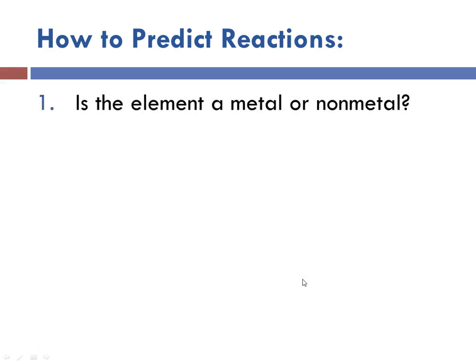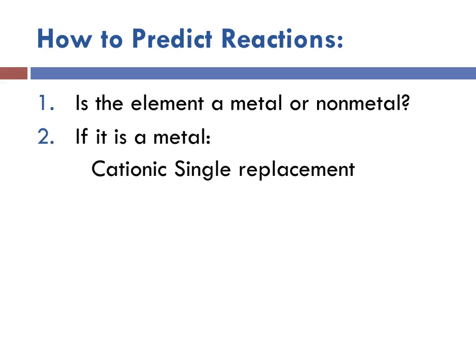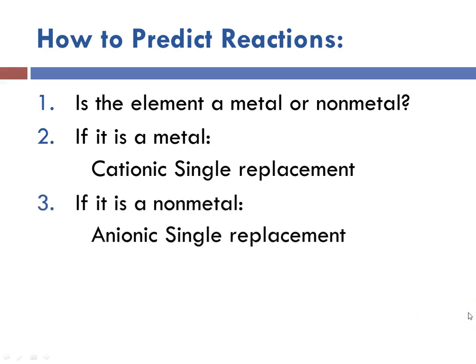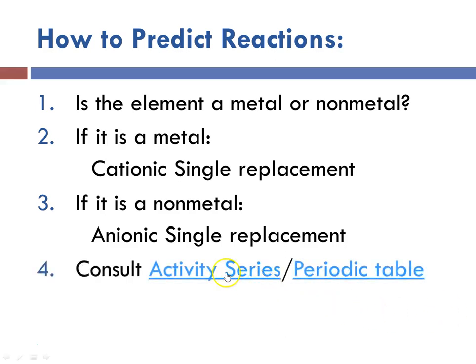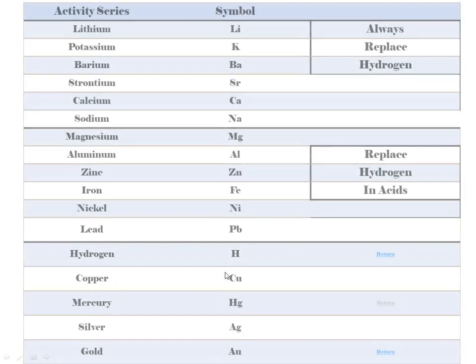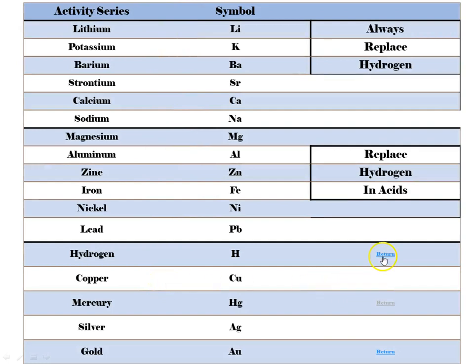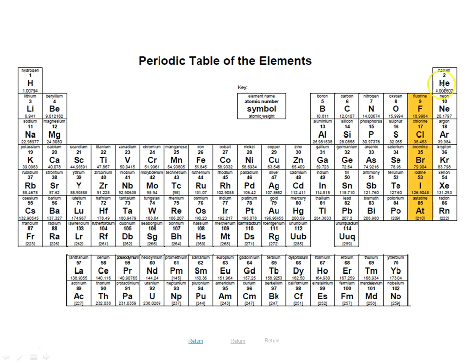There's a series of questions you have to ask yourself. First, is the element a metal or a nonmetal? If the element is a metal, it will be cationic single replacement, because metals form cations. If it's a nonmetal, it's going to be anionic single replacement, because nonmetals form negative ions — anions. In either case, you're going to have to consult the activity series. For metals, use the activity series for metals. For nonmetals, the ones we'll encounter are all halogens in group 7, and the order is just as it appears: fluorine can replace anything below it, chlorine can replace things below it but not fluorine, and so on.